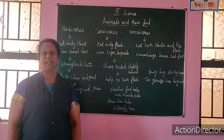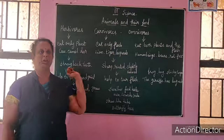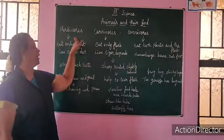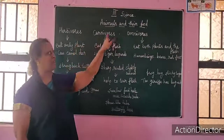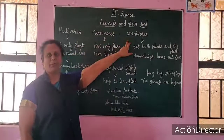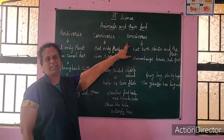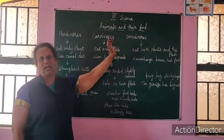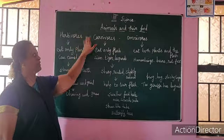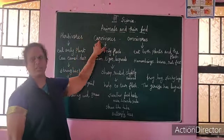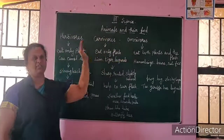I will tell you about one of the important questions. What are herbivores, carnivores, and omnivores? About food, we divide animals into three types: herbivores, carnivores, and omnivores.